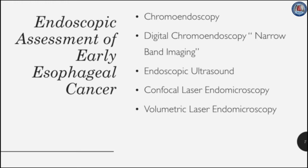We are discussing some of the most commonly used methods for endoscopic assessment of early esophageal cancer. Chromoendoscopy is traditionally used for assessing early esophageal cancer. Digital chromoendoscopy, or narrowband imaging, is another approach which uses a filter through the endoscope that allows only narrowband light, highlighting the superficial blood vessels.